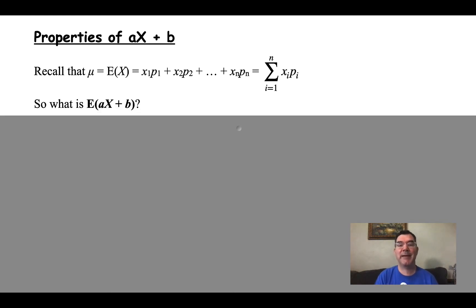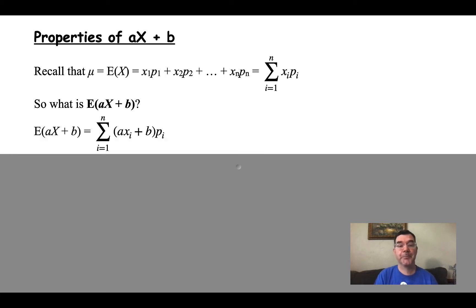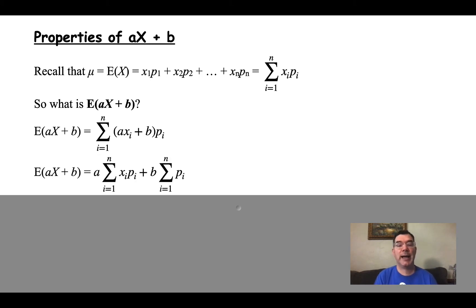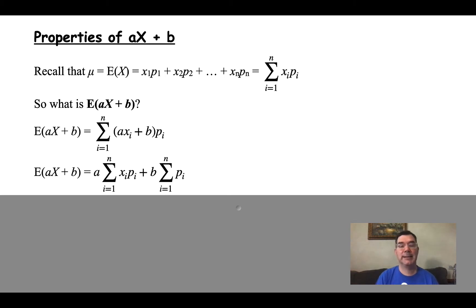So what happens if that variable x is multiplied by a constant and has another constant added to it? All I'm going to do is, in my formula, replace every x with a times that x plus that constant b. That's what happens to each of those x's. Now I'm going to expand the parentheses. The first term is a times xi times pi — all of those get multiplied together and added together. And then b times pi, all of those get added together. That's the formula that I get.